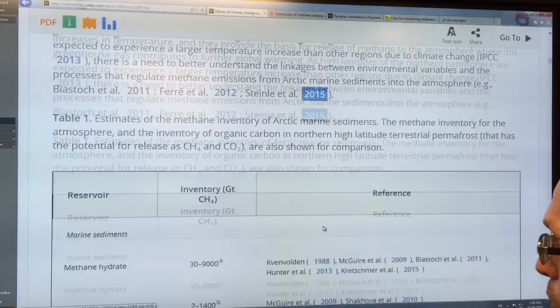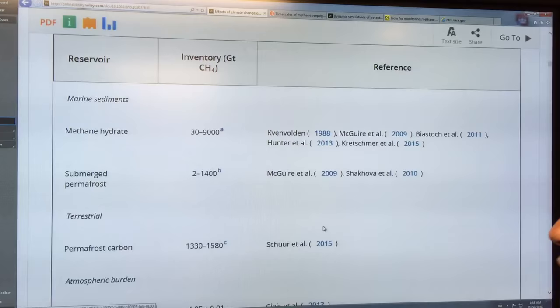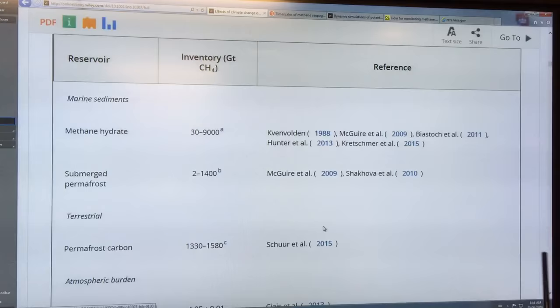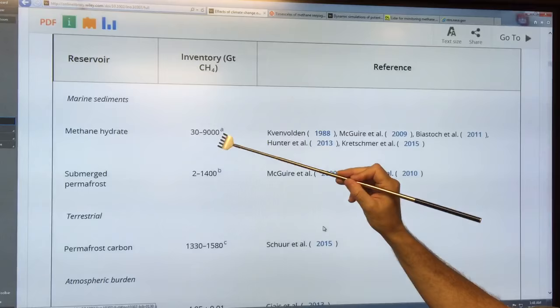So how much methane is in the Arctic? Let's look at the marine sediments. The methane hydrate, so it's the frozen water surrounding methane, it's estimated to be 30 to 9000 gigatons. This is an enormous range. If it's 30, then great. If it's 9000, not so good. We have to narrow these numbers down. It's ridiculous that this range is so large. We know so little about it.